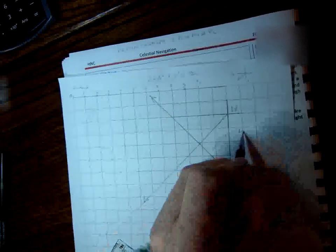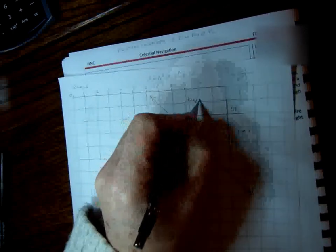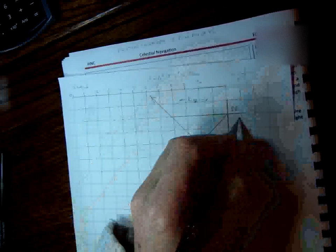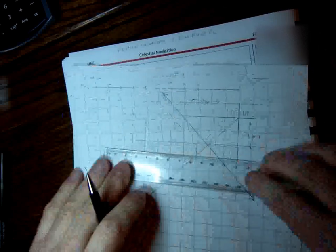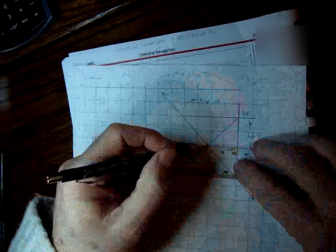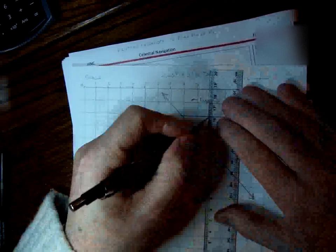That's our DR position. So if you like, this is our latitude there, and that's our departure on this side here. So we're using the plain sailing method, that's latitude departure. So if we mark from the position line, if we go across to our latitude there, and then up from there to our departure.